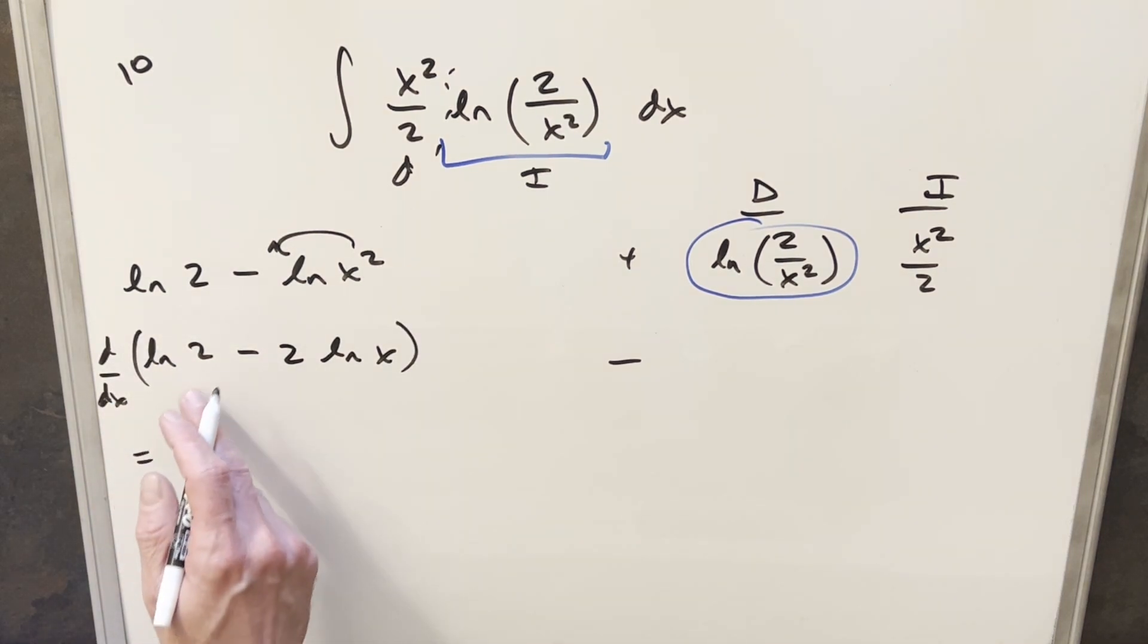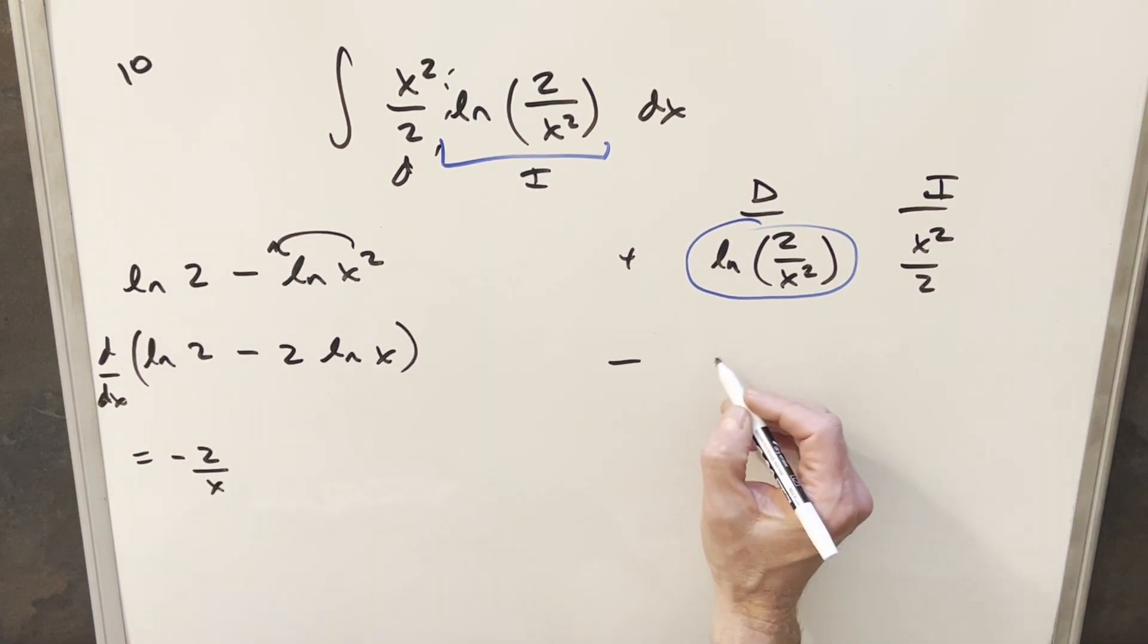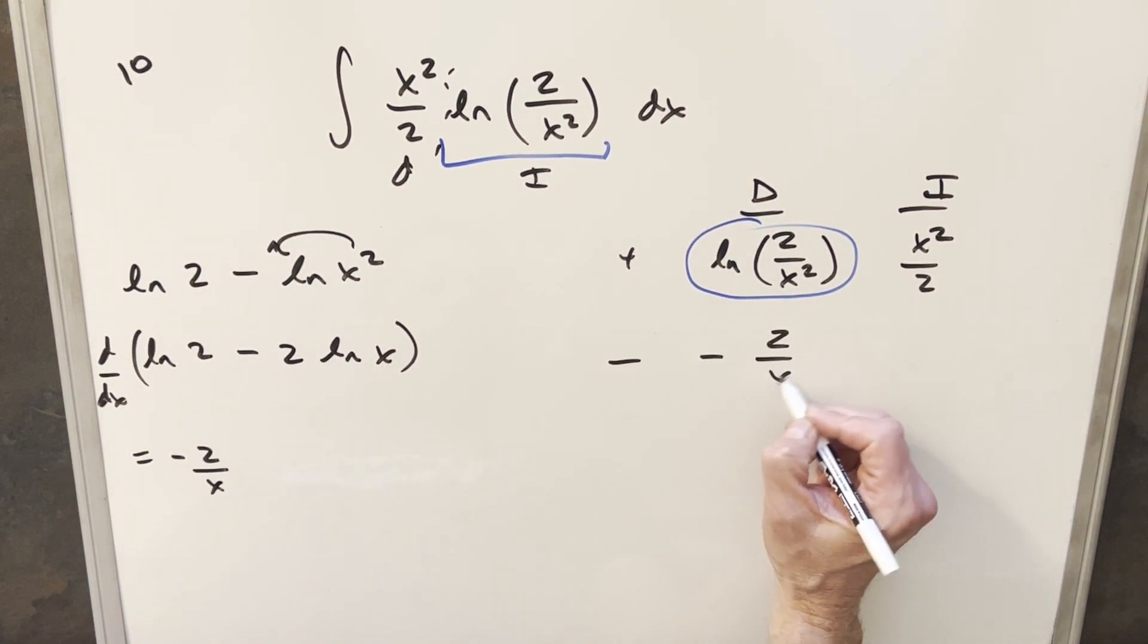But then doing it like this, natural log of 2 is just a constant, so that part's going to be 0. Derivative here, we'll have our minus 2 out front. Natural log of x is just 1 over x. So we'll just take this value and put it into our table as minus 2 over x.